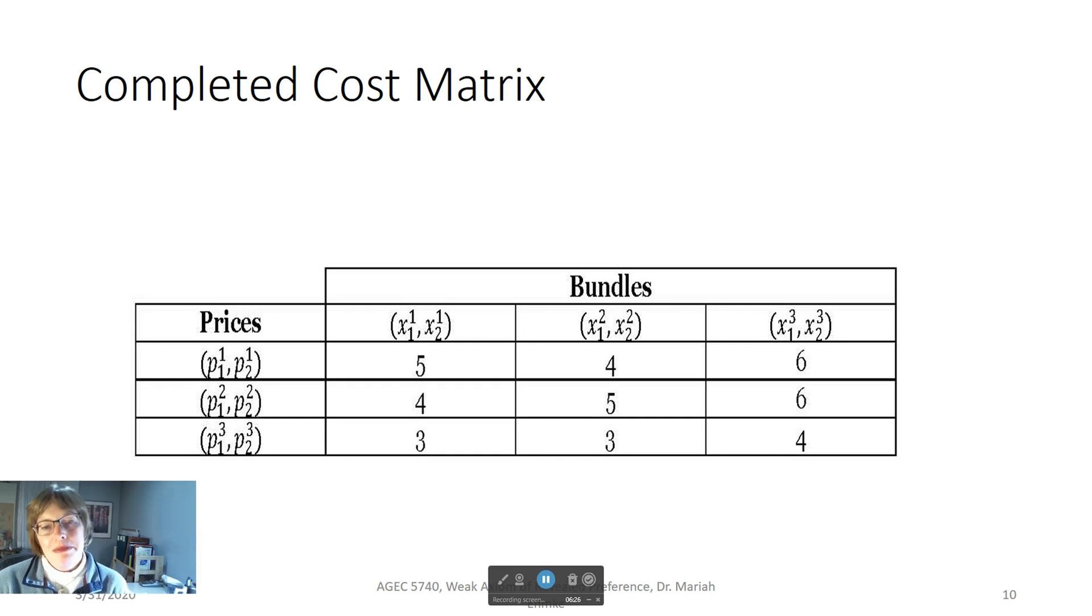Now we are prepared to conduct our WARP test. To determine what bundles are weakly preferred, we will compare what budget expenditure might be for bundles other than those chosen. The chosen bundles are represented by the diagonal matrix entries.